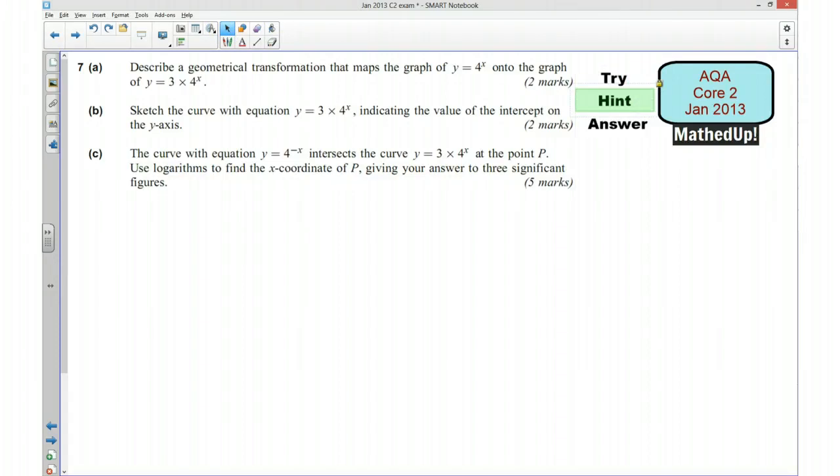Okay, well I don't know if you managed to have a go. I'm now going to go through a hint for this question. So you're asked to first of all describe a geometrical transformation that maps this graph here, y equals 4 to the power of x, onto the graph of y equals 3 times 4 to the power of x.